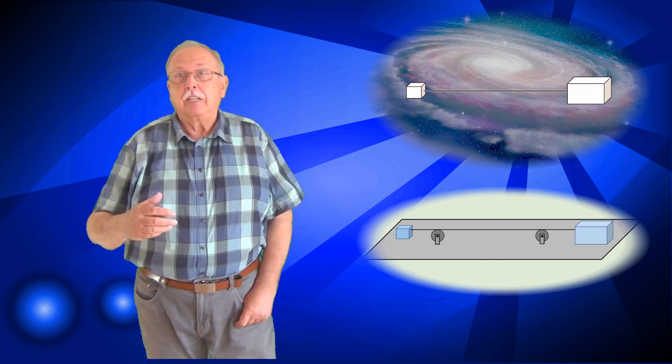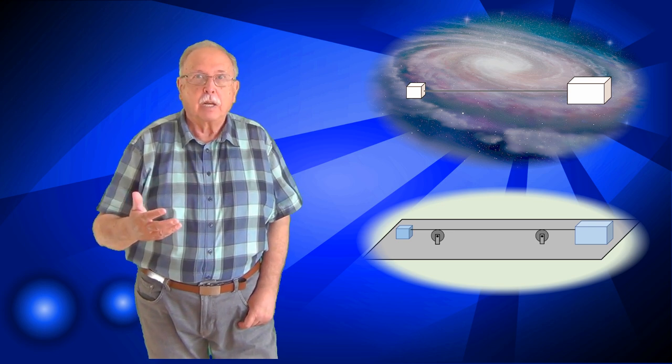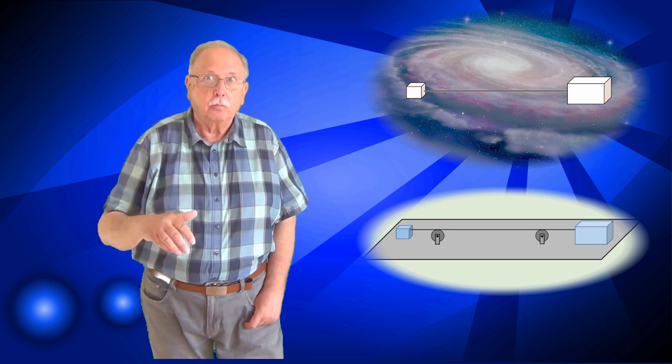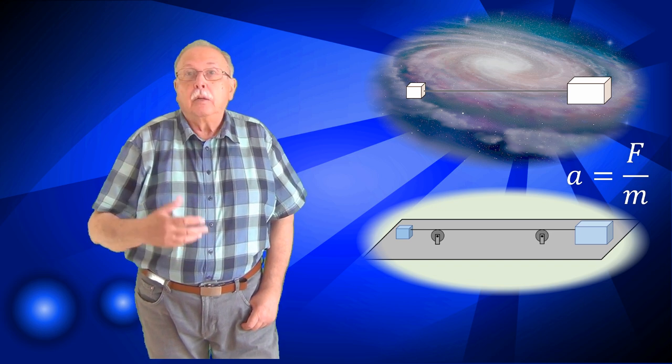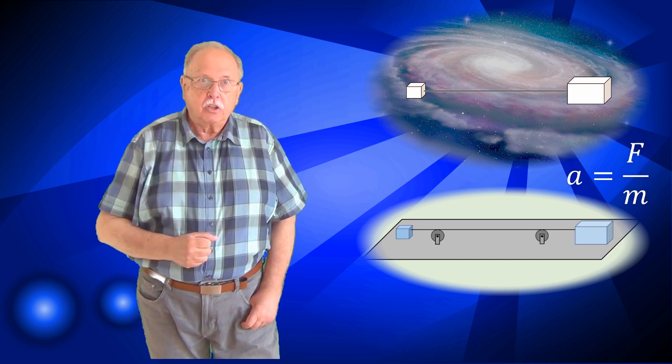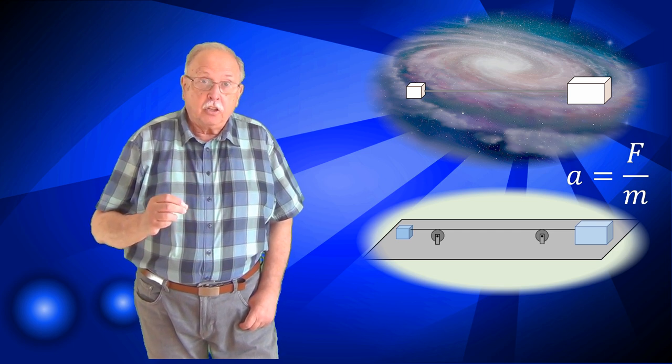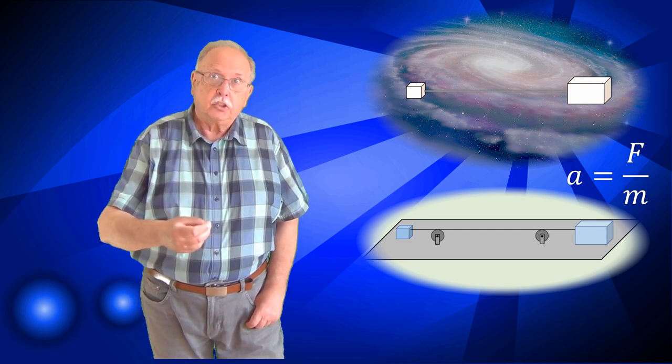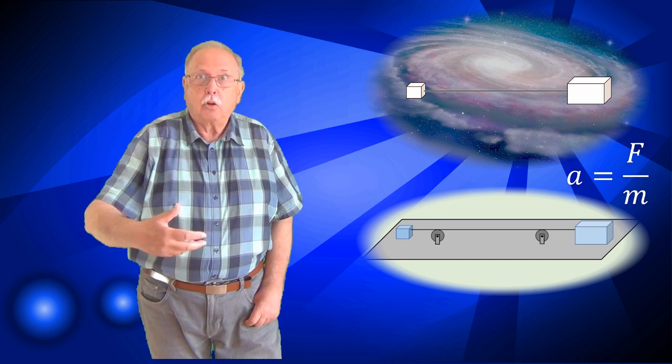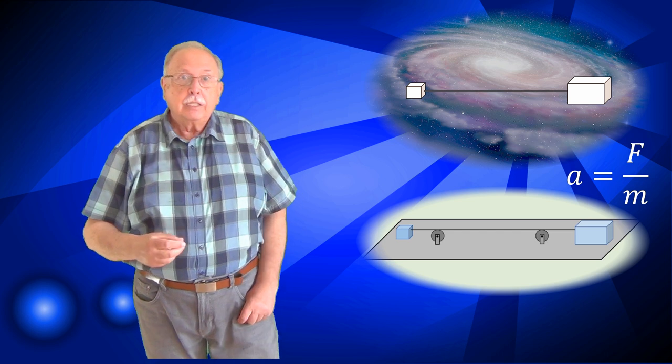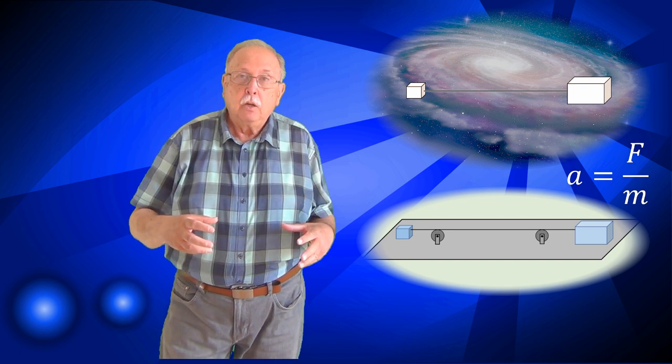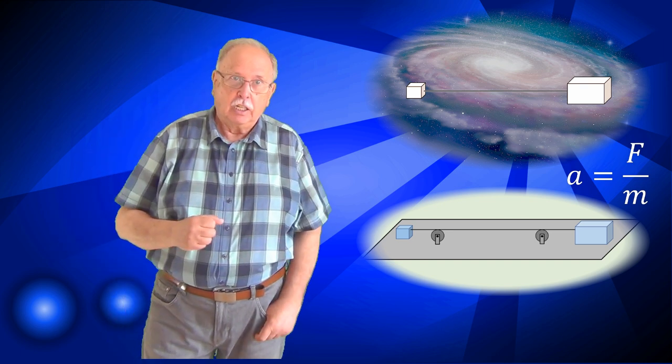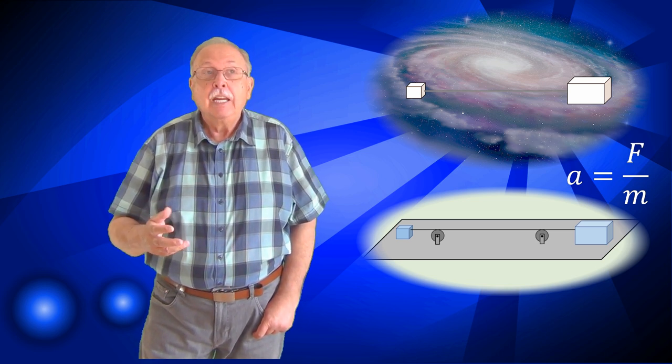Și atunci, avem situația în care două corpuri de mase diferite sunt acționate de forțe egale. Însă principiul fundamental al dinamicii spune că accelerația unui corp este direct proporțională cu forța care acționează asupra lui și invers proporțională cu masa corpului. Acest lucru îl puteți vedea sintetizat în această formulă numită ecuația principiului fundamental al dinamicii: a = F/m. Concluzia pe care o putem trage de aici este aceea că ambele corpuri se pun în mișcare, dar corpul cu masa mai mare capătă o accelerație mai mică.